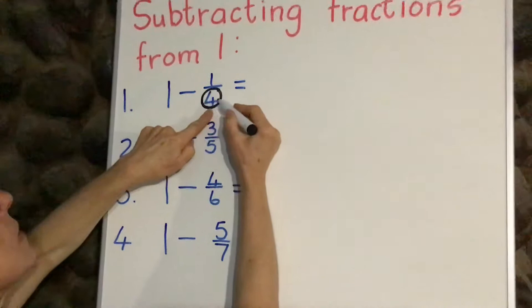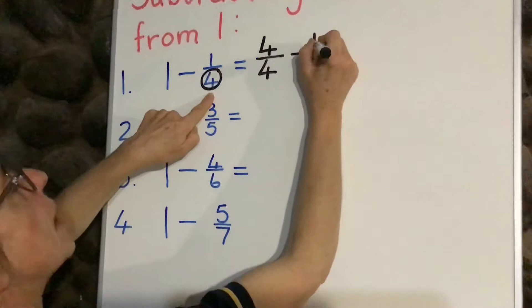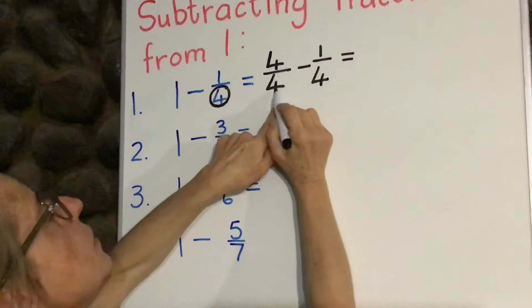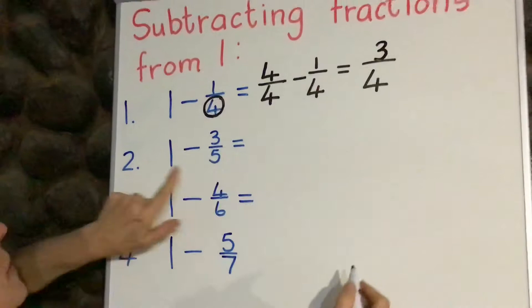Okay, right. Now we're going to minus one quarter off, and so we say four quarters minus one quarter. How many quarters will be left? We always leave the denominator the same, remember, and four minus one is three. Of course, let's go to the second example.